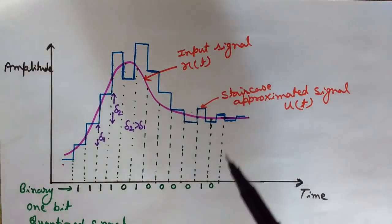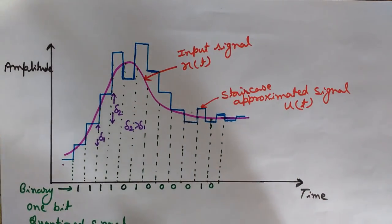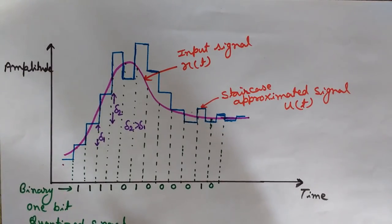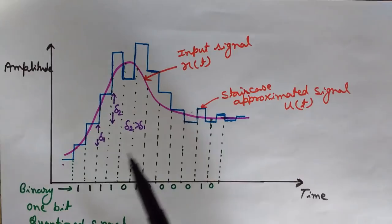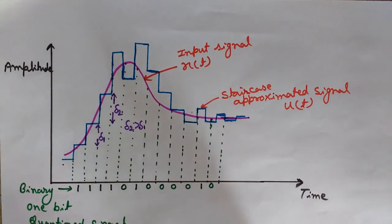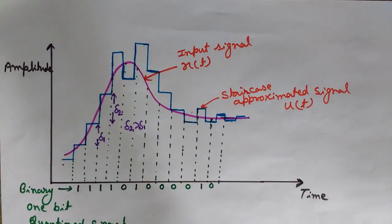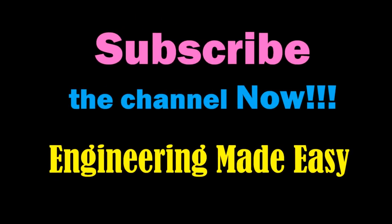Hope you liked the video. Watch my other videos also on delta modulation and the problems we face in it — slope overload distortion and granular noise, the quantization errors observed in delta modulation — to understand why we use adaptive delta modulation. Adaptive delta modulation is the advanced version of delta modulation: it adapts itself to the variations in the input signal and varies the step size, which was fixed in the case of delta modulation. Don't forget to subscribe to Engineering Made Easy for the latest notifications.